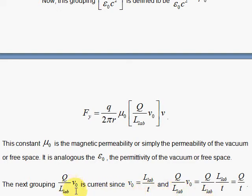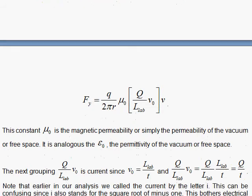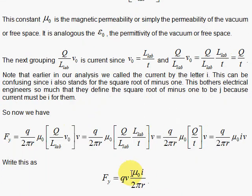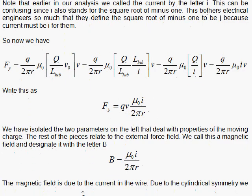The V naught here, where you plug in L lab over the time T, is basically your speed of your electrons moving to the left. That means electrons will go the distance L lab in time T, and this will cancel. Q over T is your current, and the current we use I for. We get this nice expression where we have grouped the parameters of the moving test charge and then everything else. You may recognize this to be the magnetic field for current in a wire.